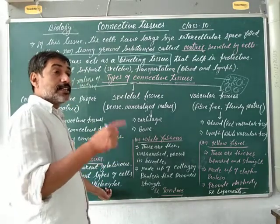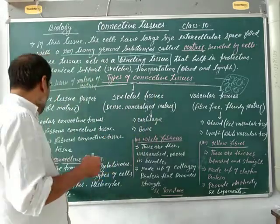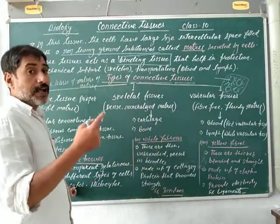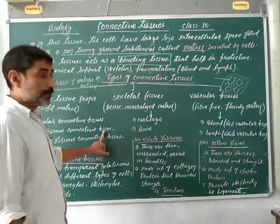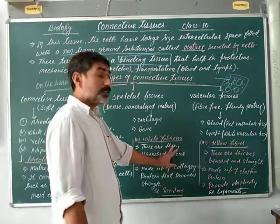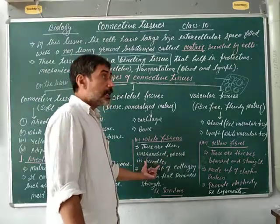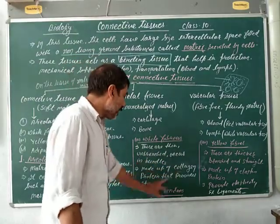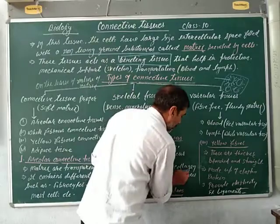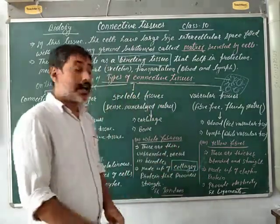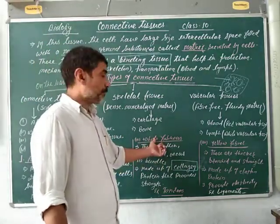Histocytes are cells which kill microbes and foreign materials. Fibroblasts produce the fibers. Now, the second type is white fibrous connective tissue. These fibers are unbranched. They are made up of collagen protein, which provides strength to the white fibrous connective tissue.